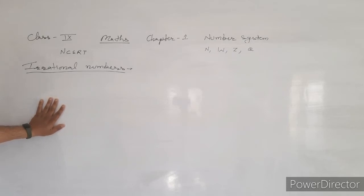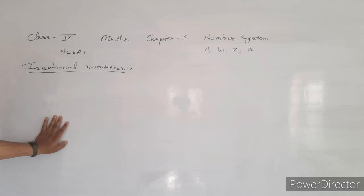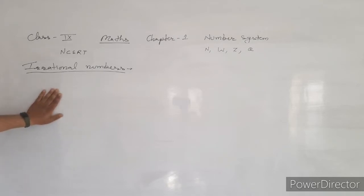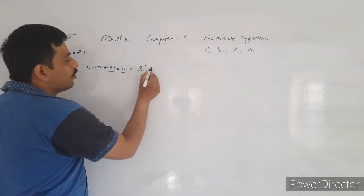The next topic is irrational numbers. Irrational numbers and rational numbers are the important topics in our Class 9. We will study about rational and irrational numbers in this chapter. In Class 10, the first chapter is Real Numbers, where we will study about real numbers further. Irrational numbers are represented by either Q-dash or T.